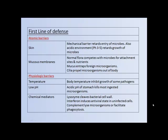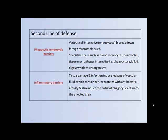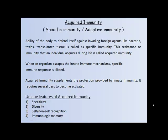A summary of all these nonspecific host defenses is given in the slide. Specific immunity, also called adaptive immunity. The ability of the body to defend itself against invading foreign agents like bacteria, toxins, and transplanted tissue is called specific immunity.